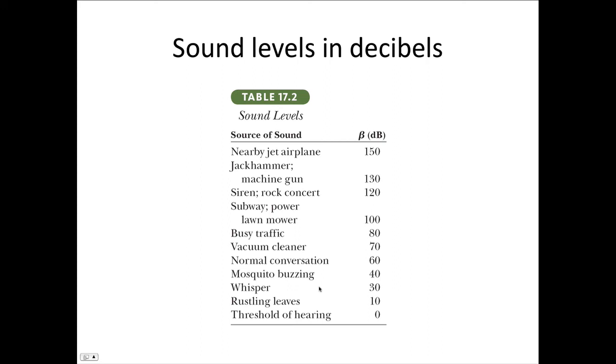To give you some idea about the kind of numbers we're dealing with: a nearby jet airplane is 150 decibels, jackhammer will be 130, siren 120. Things which are very quiet: mosquito is around 40, a whisper is 30, rustling leaves are around 10.